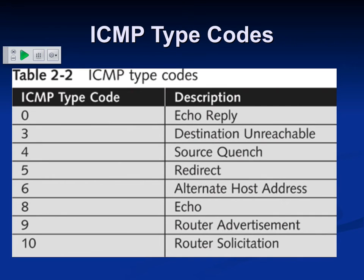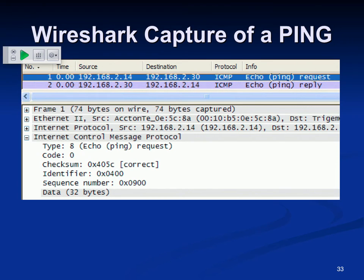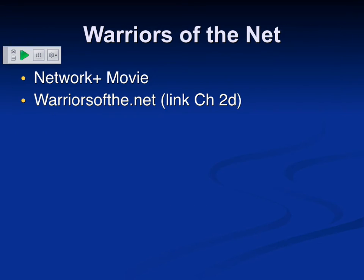The most common ICMP messages are an echo request type 8 and an echo reply type 0. Unfortunately, people used ping for malicious purposes so much that Microsoft blocked it with their firewall, and Microsoft machines no longer answer pings by default. In Wireshark you can see ICMP echo request and echo reply - it's a very simple protocol, only 74 bytes to send a ping and receive a reply.